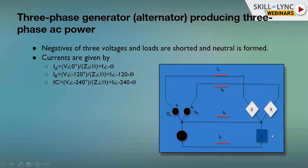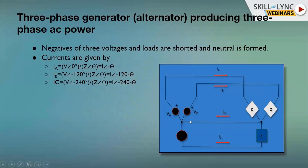A balanced load means all three load impedances are equal in nature — all resistive, all capacitive, or all inductive. In a balanced three-phase AC system, when we calculate the neutral current In = Ia + Ib + Ic, the result is zero. This is an important advantage of the balanced three-phase system: the current flowing through the neutral wire is zero.